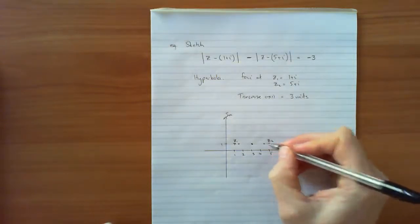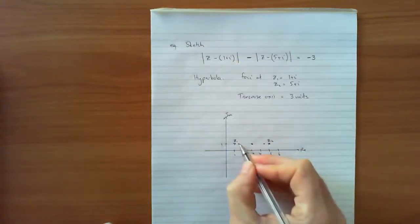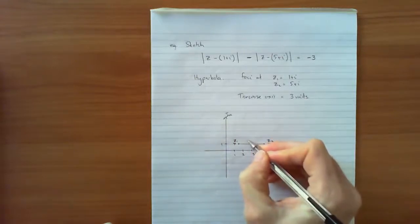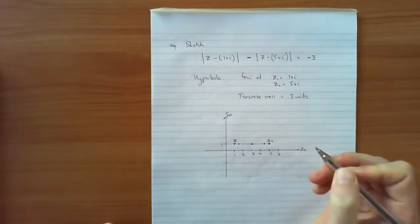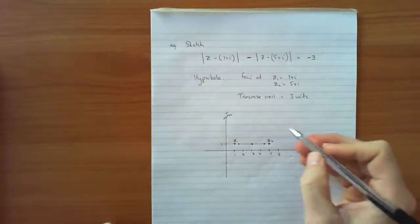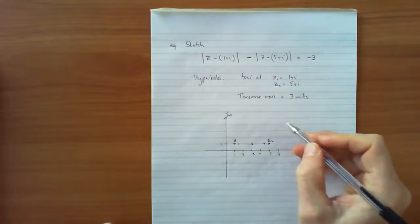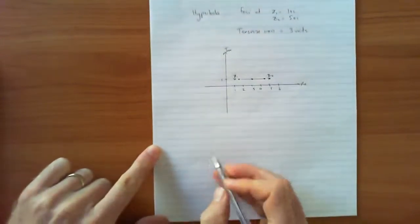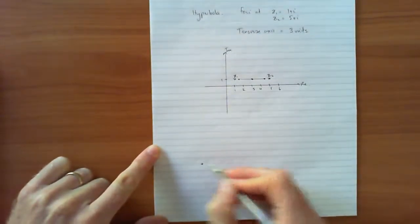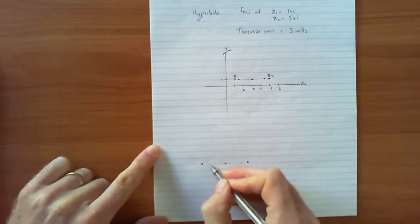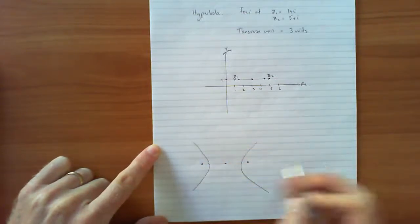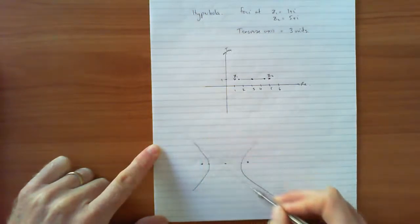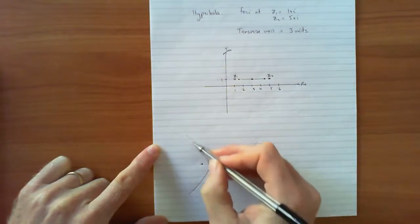So the transverse axis is three units long altogether, and I've now got the vertices of my hyperbola. With the two foci, the center, and the vertices identified, I know the hyperbola is going to have two branches opening in opposite directions. Remember that in complex form we are not drawing in the asymptotes — we just draw the branches of the hyperbola.